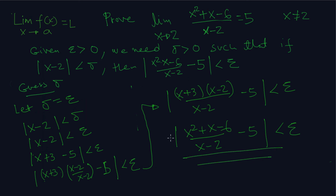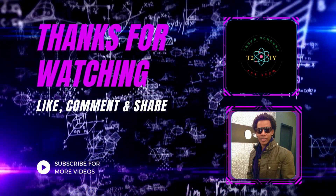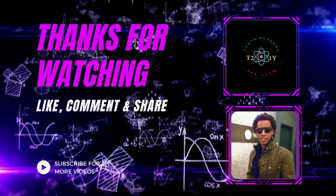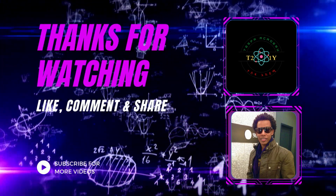And that's how you prove it. In this case we say let delta equal epsilon. Hopefully this example helped you understand the idea of epsilon and delta. Keep grinding, keep grinding.